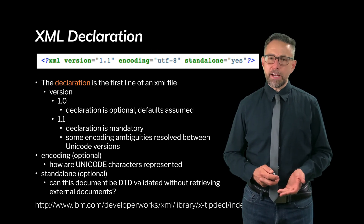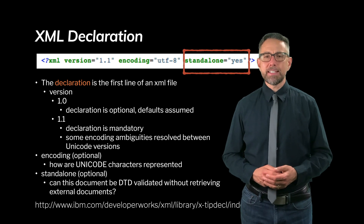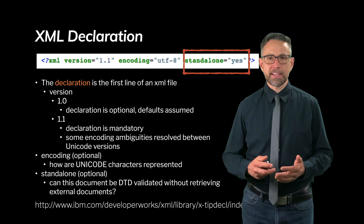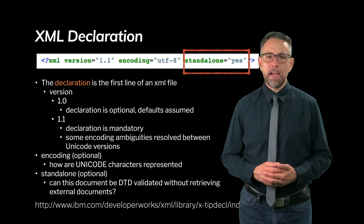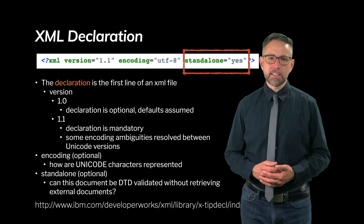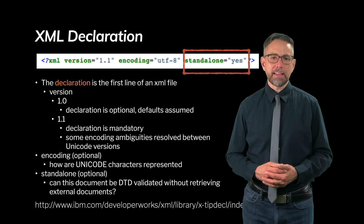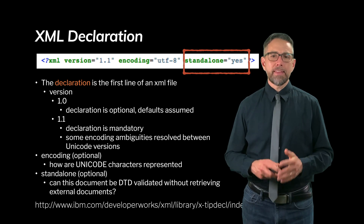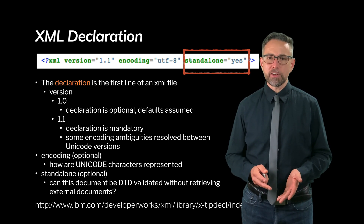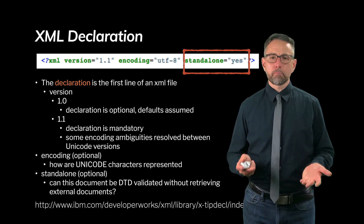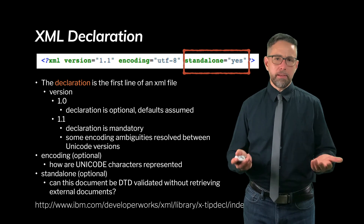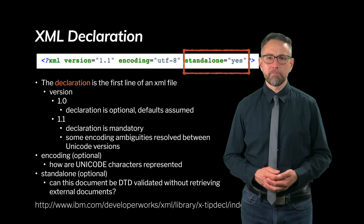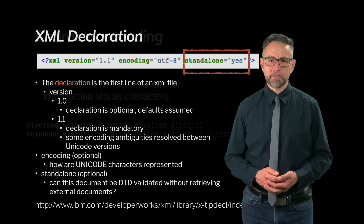Finally, there is an attribute called 'standalone' assigned the value 'yes' in double quotes. This means the document can be DTD validated without retrieving external documents. That relates to the schema, which we haven't talked about yet, so we'll cover it when we get to schemas.